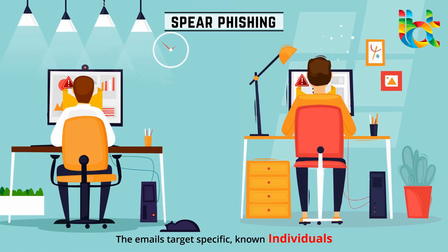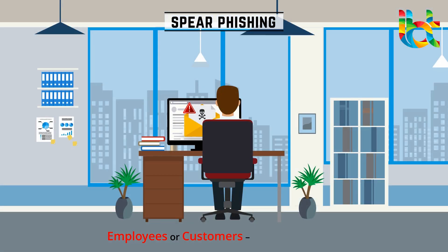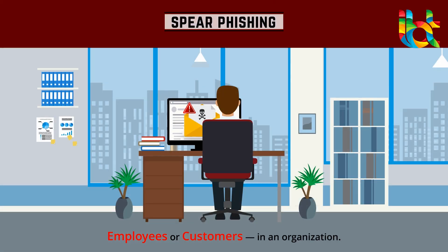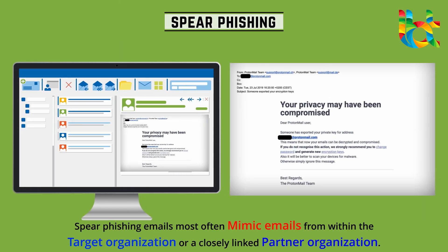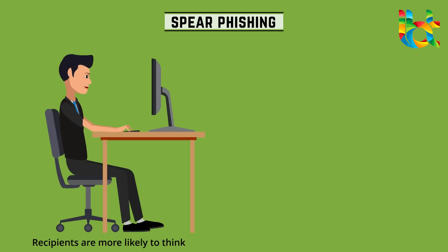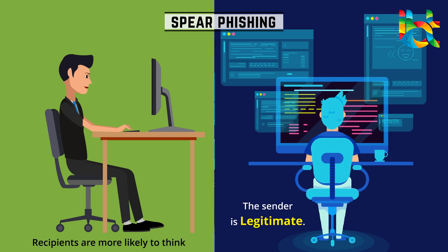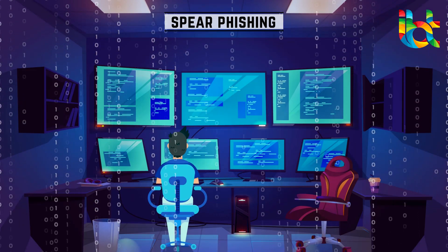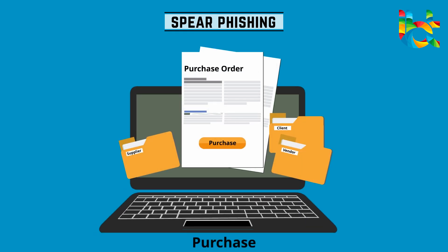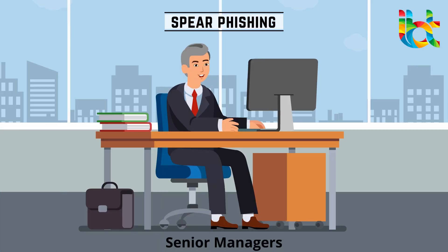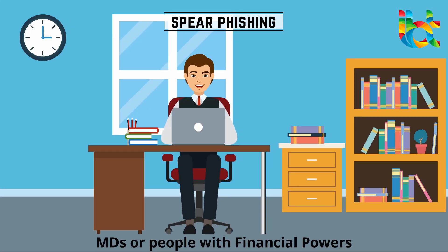Spear phishing: spear phishing is targeted phishing. The emails target specific known individuals, employees, or customers in an organization. Spear phishing emails most often mimic emails from within the target organization or a closely linked partner organization, so recipients are more likely to think the sender is legitimate. Departments or people who are targeted include accounts, purchasing, senior managers, MDs, or people with financial powers within the organization.